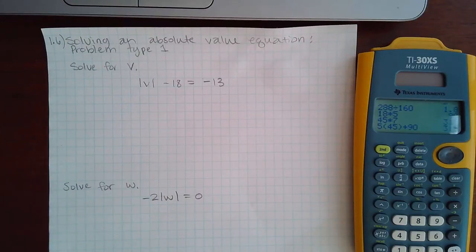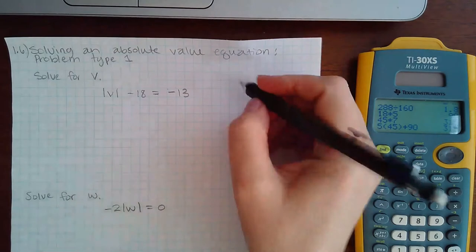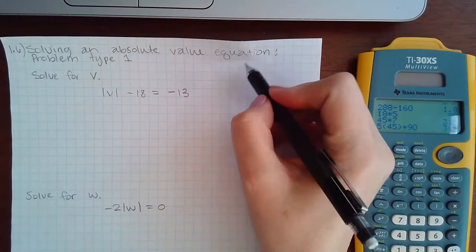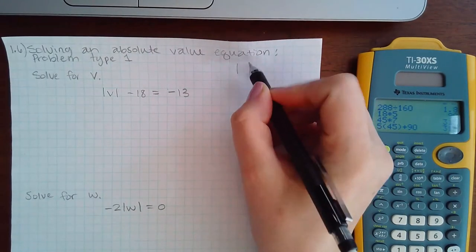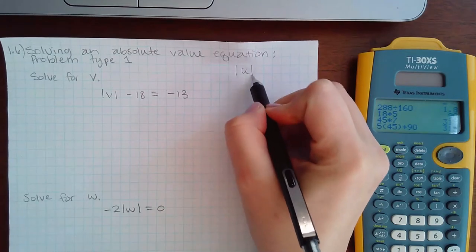Okay, here we have problem 1.6, solving an absolute value equation problem type 1. The steps for absolute value problems: one, you have to isolate the absolute value. Once you've isolated the absolute value and you have it in this form...